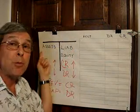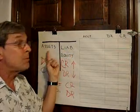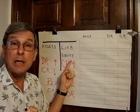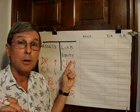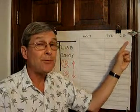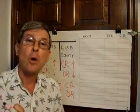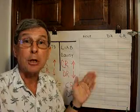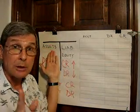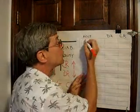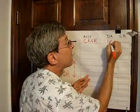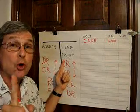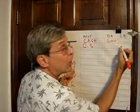Now let's analyze that from the point of view of the business. The business has received an asset — namely cash — and has now created equity. What kind of equity? Common stock. We're going to record this in the form of a journal entry, following the convention of putting debits first. The company received an asset, cash — when an asset goes up, that's a debit — so we're going to debit cash for $1,000. And the company now also has equity, common stock, so we're going to credit common stock for $1,000.